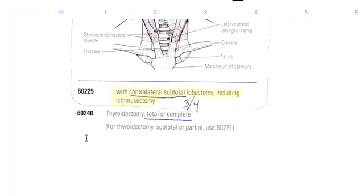And then 60225 is with contralateral subtotal lobectomy. So they had half the butterfly on the right side gone and now they're taking a little bit on the opposite side. So I view that as three quarters of the butterfly gone.